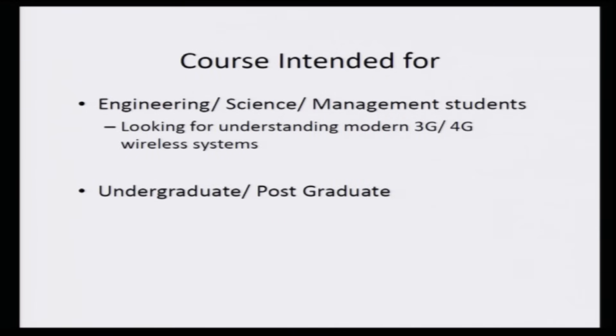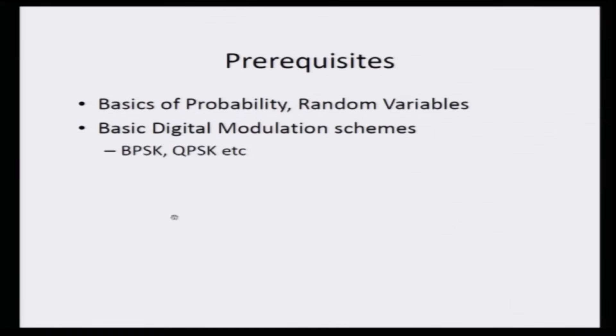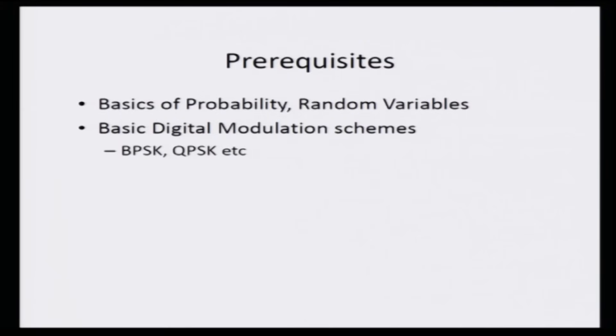Whom is this course intended for? It is intended for engineering, science, and management students looking to understand more about current 3G and 4G wireless technologies. Both undergraduate and postgraduate students should find this course suitable. There are some mild prerequisites that will help you better appreciate the content: fundamental aspects of probability, random variables, random processes, some linear algebra, comfort with mathematical analysis, and also some basics of digital modulation schemes such as BPSK (binary phase shift keying), QPSK (quadrature phase shift keying), and so on.